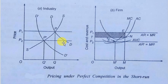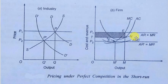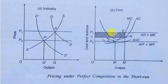In the short run, with a given supply SS and demand DD, the market-determined price is OP1, accepted by the firm where average revenue equals marginal revenue. Since it is a single price prevailing in the market, AR equals MR. The marginal cost curve is less than the average cost until the minimum average cost point, after which MC exceeds AC.